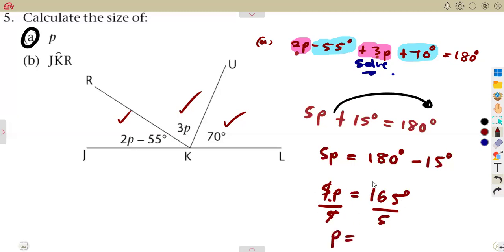Remember, the product or multiplication divides by the inverse, so you're going to divide by 5 both sides of the equation. That's going to give you 33 degrees. So that is the value of p. If you substitute 33, you must obtain 180 degrees on this whole straight line.